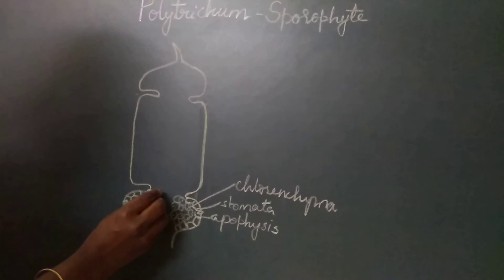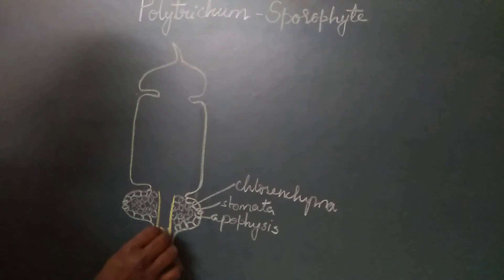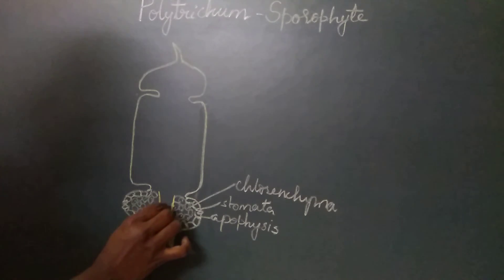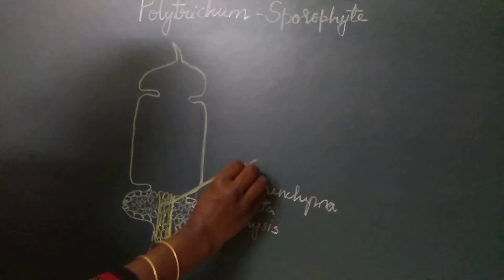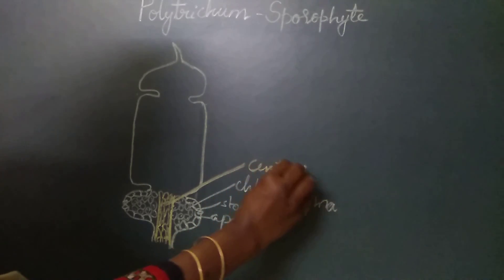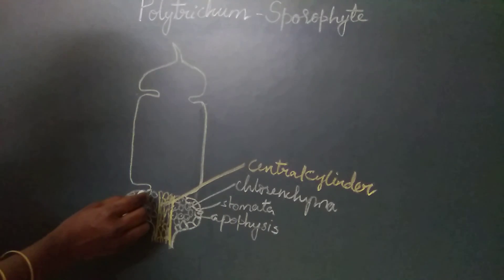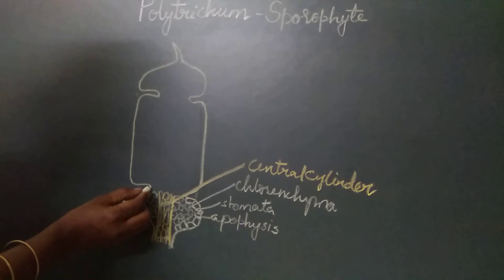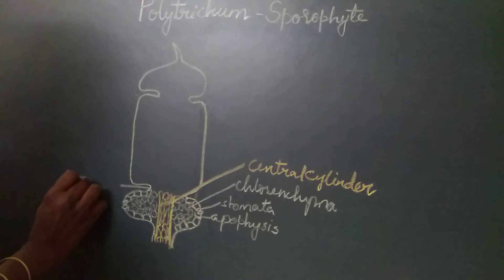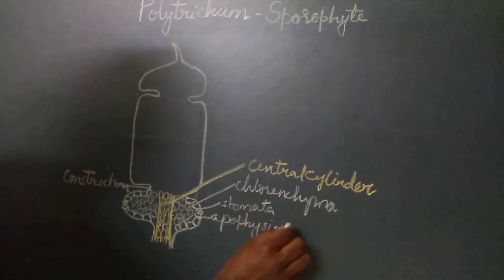The central region of the apophysis has elongated cells which are the continuation of the central cylinder in the seta zone. From the seta, the central cylinder enters into the apophysis region. Above the apophysis is the theca region, separated from it by a constriction. The apophysis is a sterile zone.